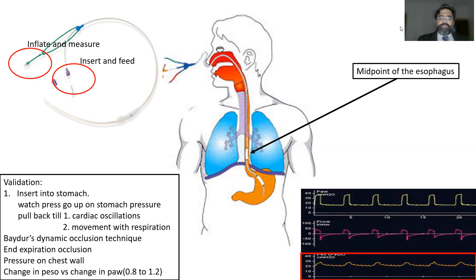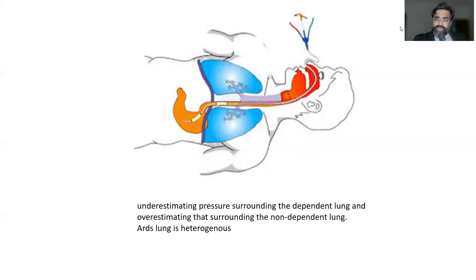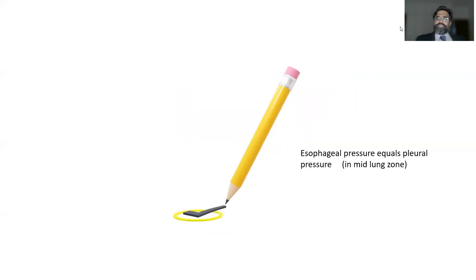To verify correct position, we perform an end-expiratory occlusion: press the end-expiratory occlusion button on the ventilator and gently press the chest wall. When the chest wall is compressed, the esophageal manometry pressure should rise, and the peak airway pressure should also rise — and they should be close to each other by a ratio of 0.8 to 1.2. This confirms correct esophageal balloon position. It is known that esophageal pressure equals pleural pressure in the mid-lung zone, which is why we verify placement at the mid-esophagus.